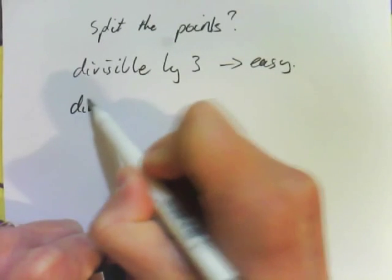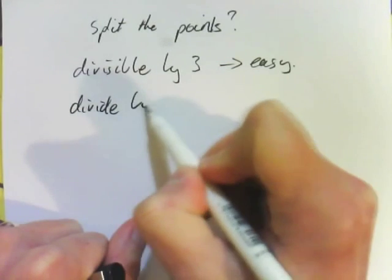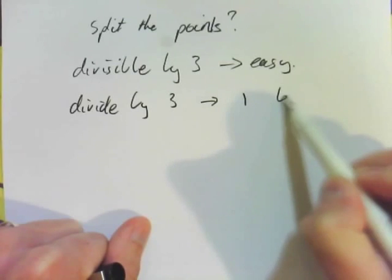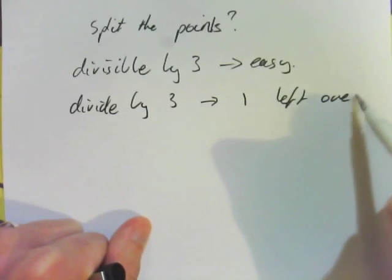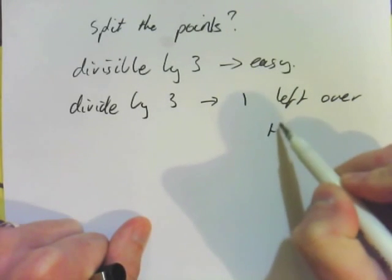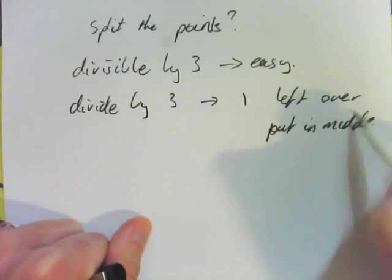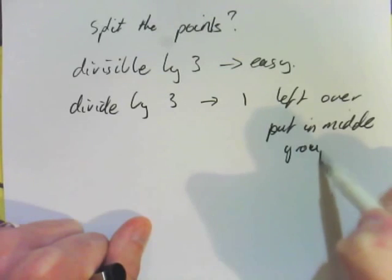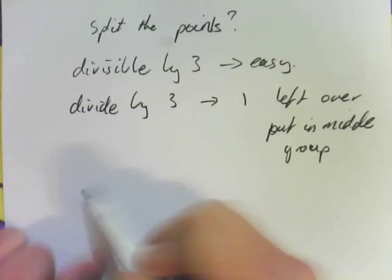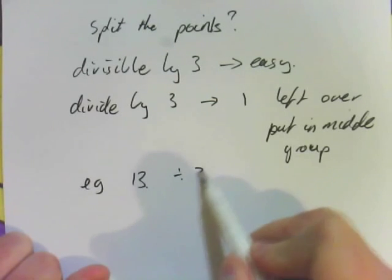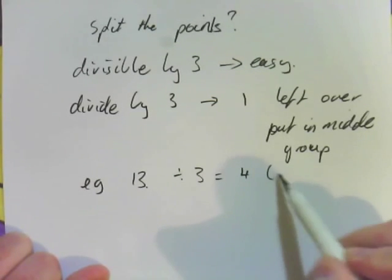What you do is divide by 3, and then use the following rule. If you have 1 left over, so 1 remainder, that goes in the middle group. For example, if I had 13 points, if I divide that by 3, I get 4 with 1 remainder.